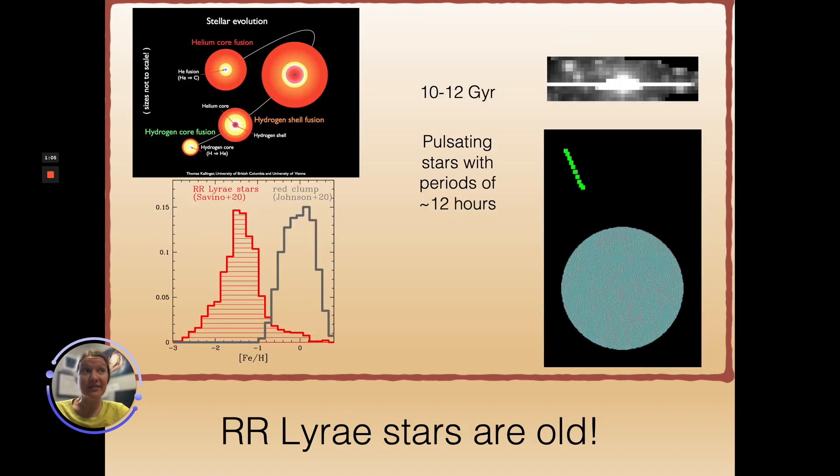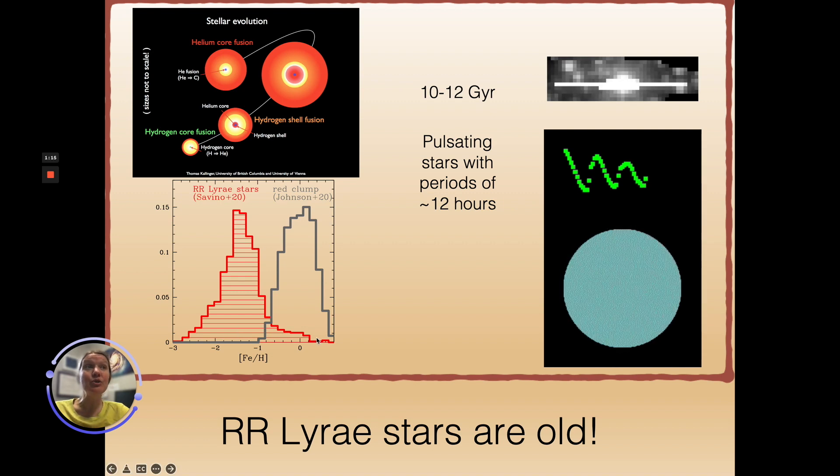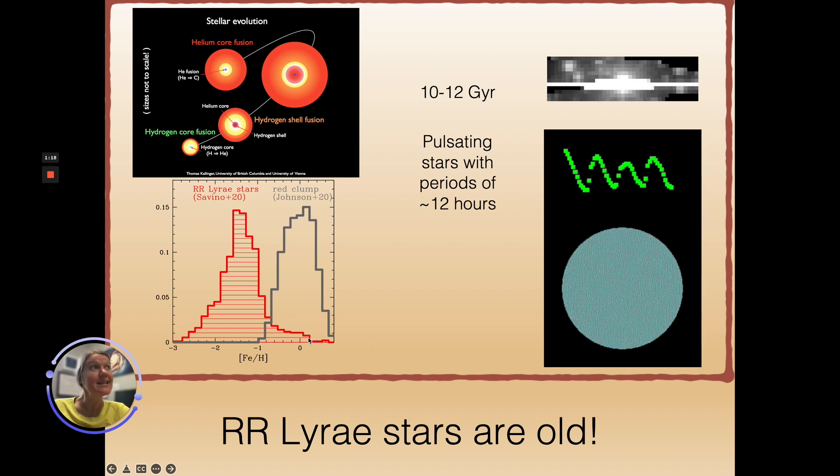However, RR Lyrae stars show a different story. RR Lyrae stars are more metal-poor than the bulk of the stars in the galactic bulge. They peak at metallicities of about -1.2 as compared to the sun-like metallicities found for a typical giant or red clump star in the bulge.